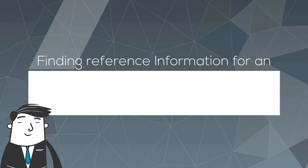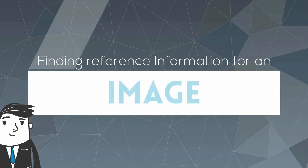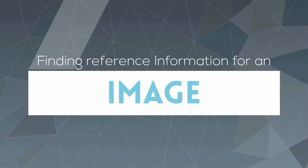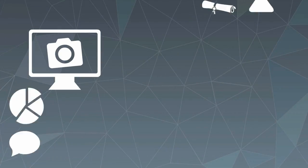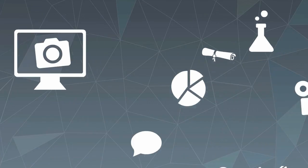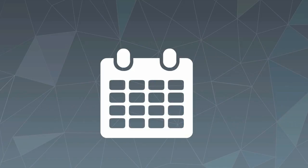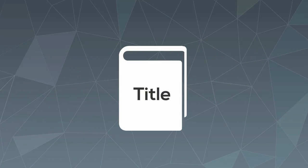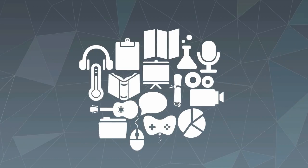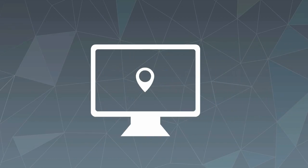Finding reference information for an image on the Internet. The basic format for referencing an electronic image is the same as for other referencing. Find as much information as you can about the author, the year the image was created, the title, the type of work, and where it was retrieved.